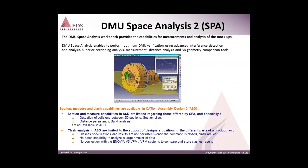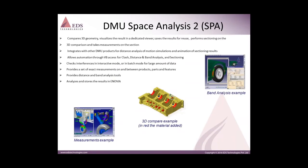So in assembly design, these are the limitations, but which we can overcome with the help of DMU Space Analysis. We can compare 3D geometries, visualize the result in a dedicated viewer, save the result for reuse, and perform sectioning on those 3D roles with 3D color codes in a 3D environment. Integration with DMU and other DMU products for distance analysis of motion, simulations, and animation of section results allows automation through VB access for clash detection and band analysis — and while creating kinematic simulations, we can use this.